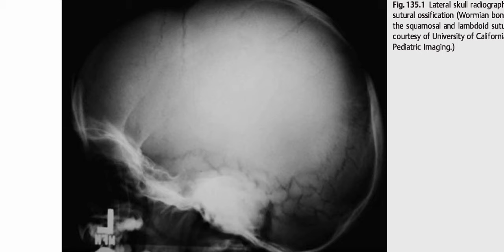This is a child who presented with facial abnormalities. On the lateral skull radiograph, there is intrasutural ossification — wormian bones — involving the squamous and lambdoid sutures. The key finding is wormian bones and the diagnosis is cleidocranial dysostosis.